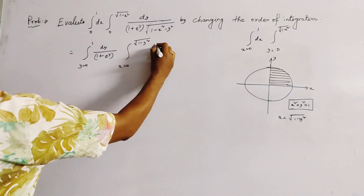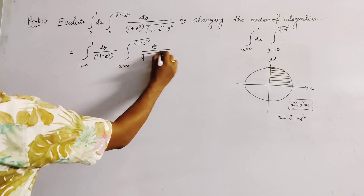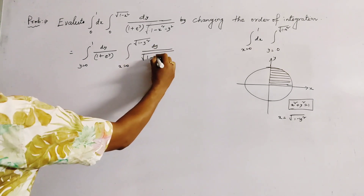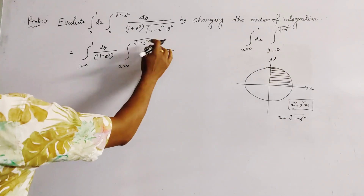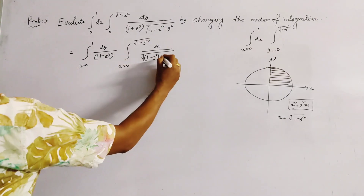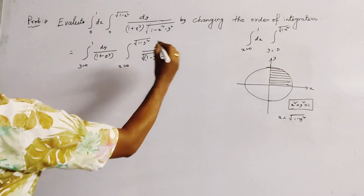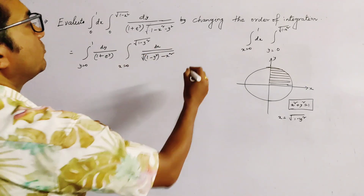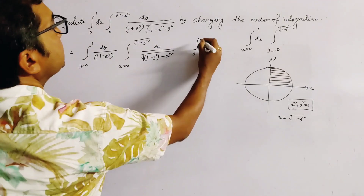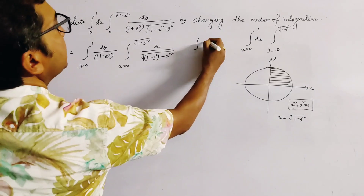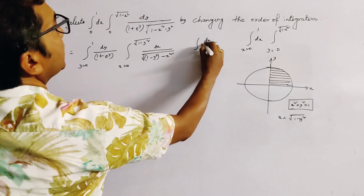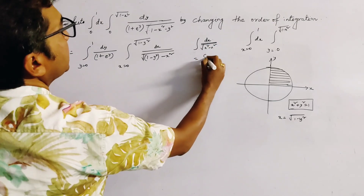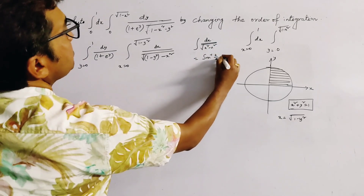And this is dx divided by root(1 minus x squared). We apply here the formula: integral of dx divided by root(a squared minus x squared) equals sin inverse(x over a).